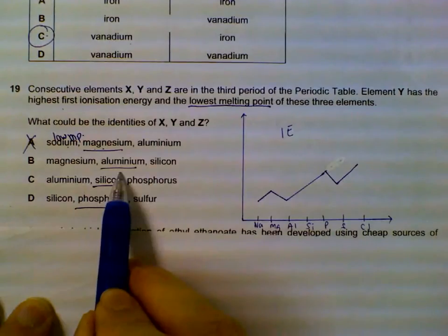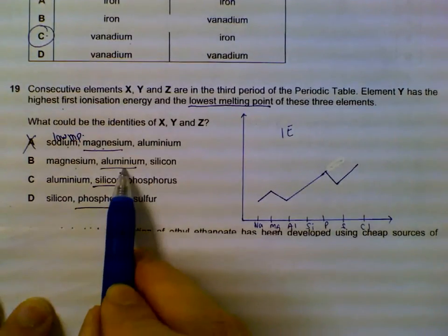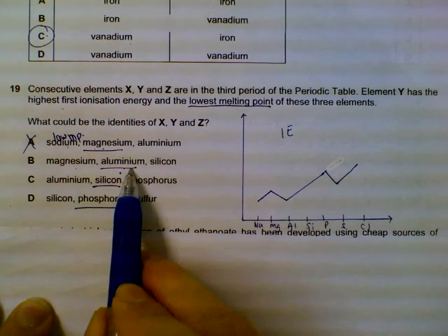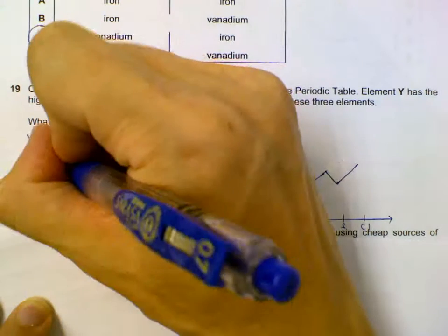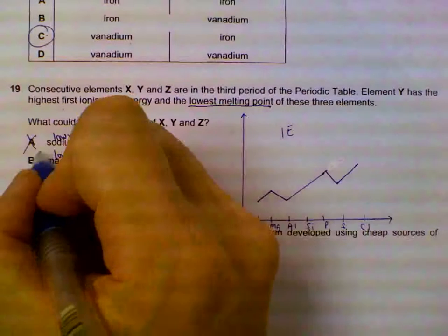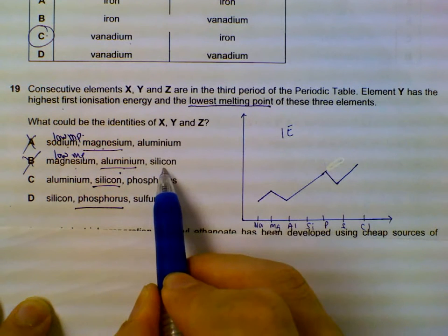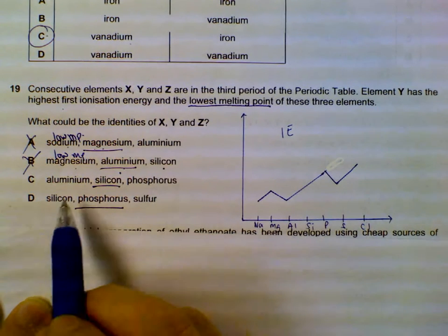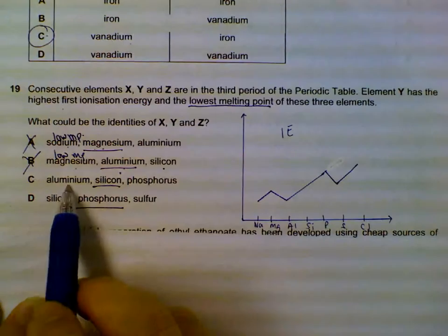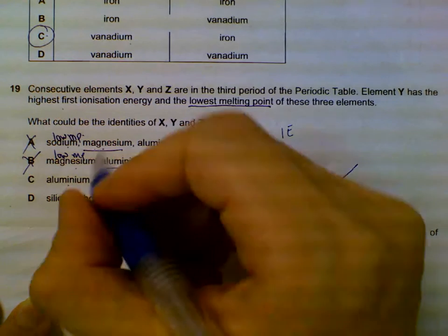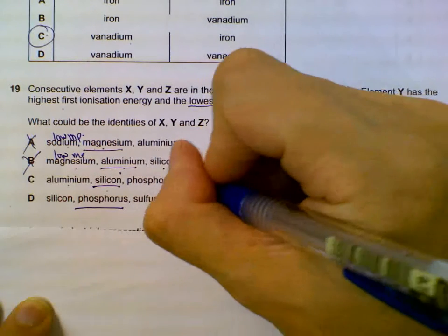Aluminium is not the lowest melting point overall — the lowest among these is magnesium, which can donate two electrons, while aluminium donates three. The lowest melting point is magnesium. Silicon is not metallic bonding; it is giant covalent, so it has the highest melting point among all three. For option D — aluminium, silicon, phosphorus — silicon is giant covalent and has the highest melting point, while the lowest is actually phosphorus, which is simple covalent.